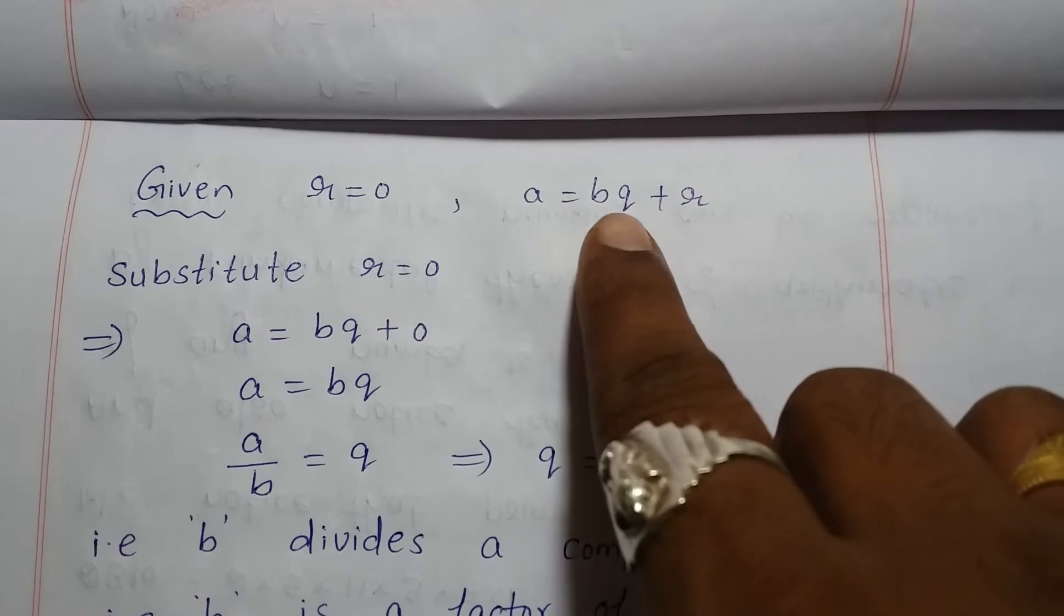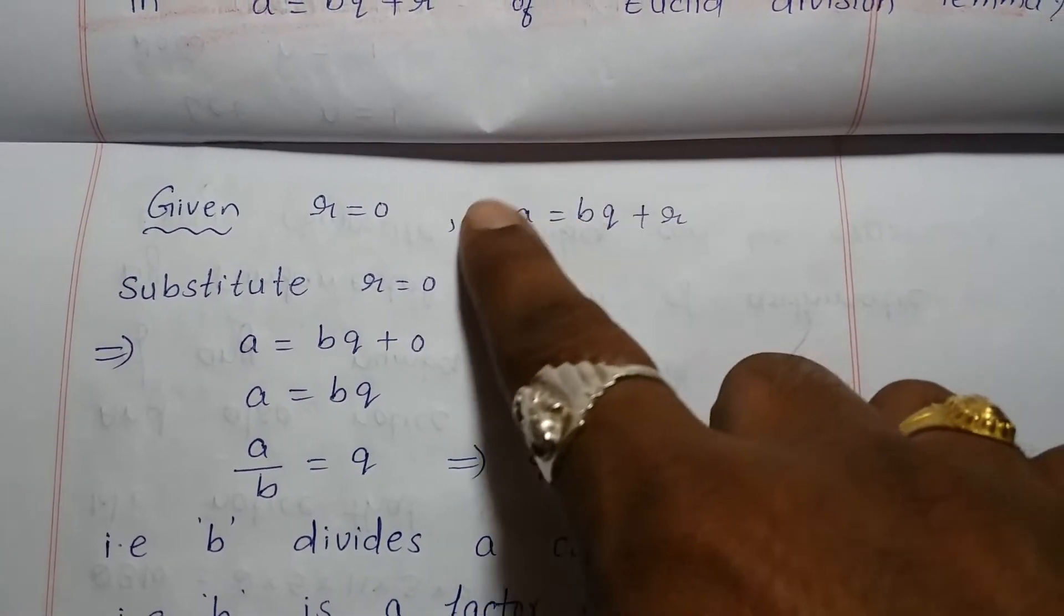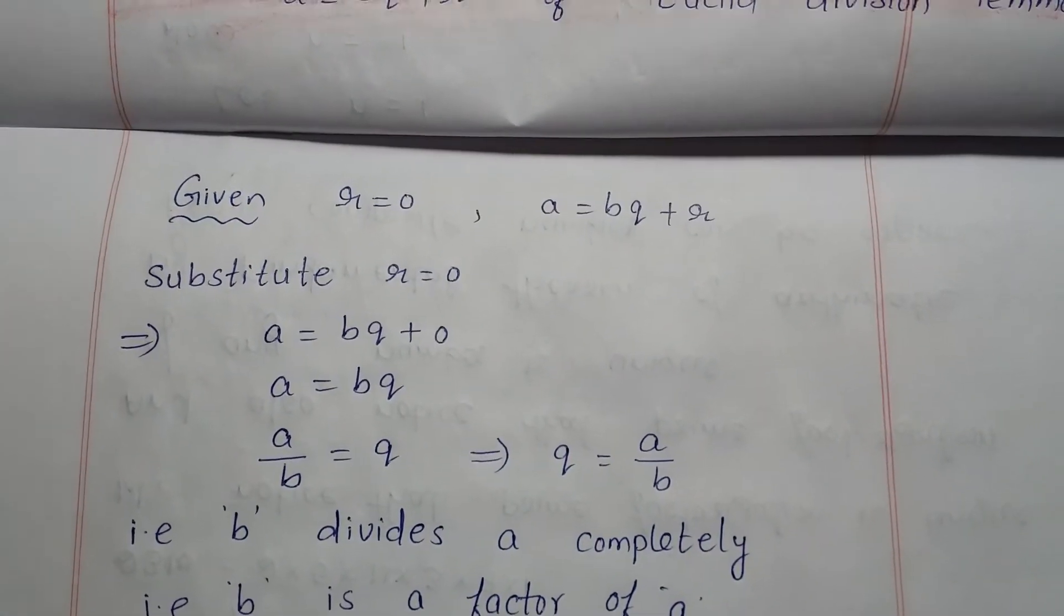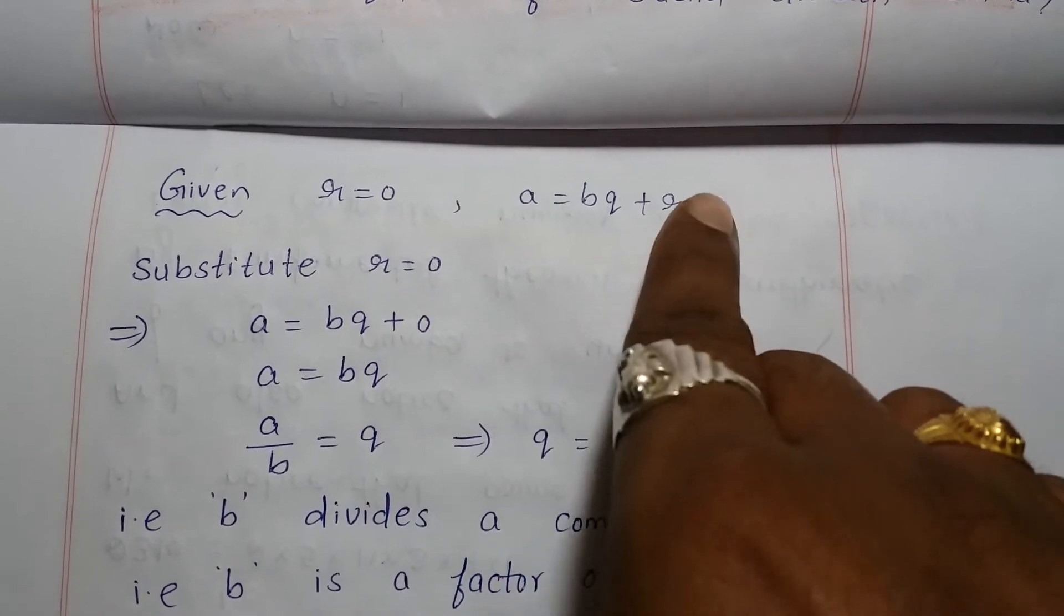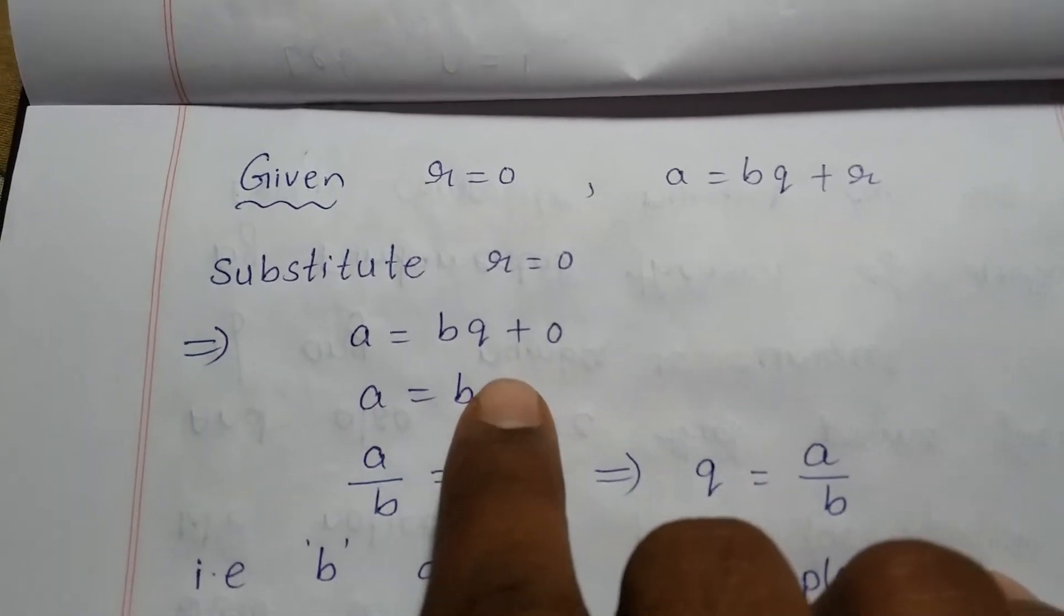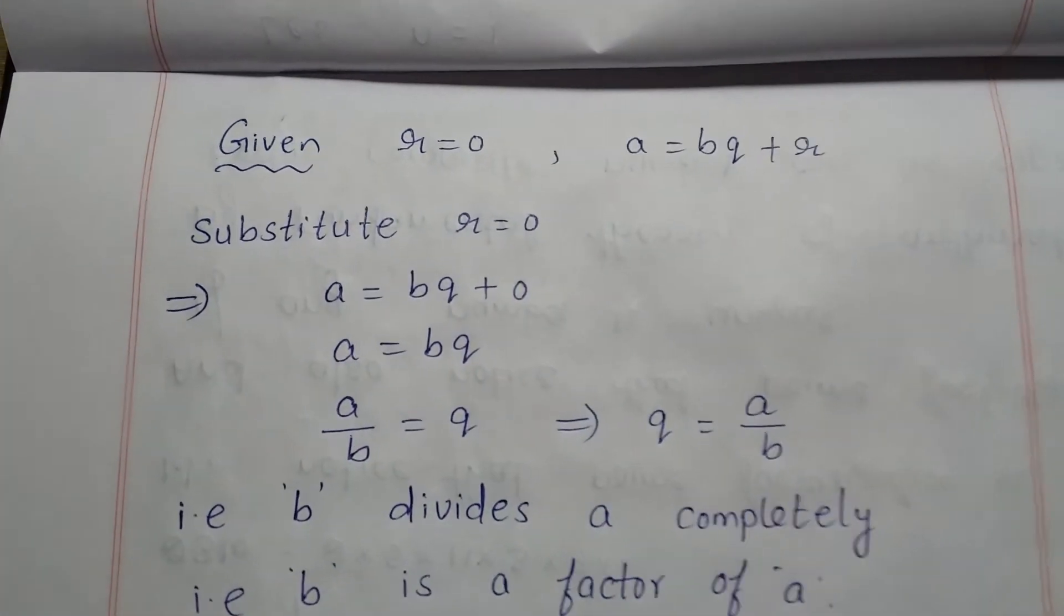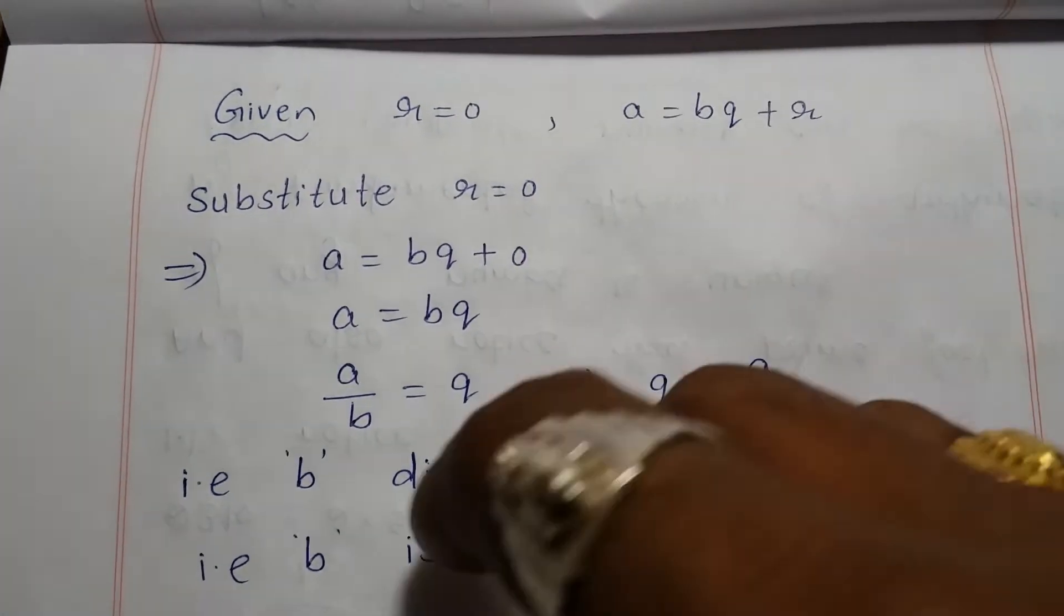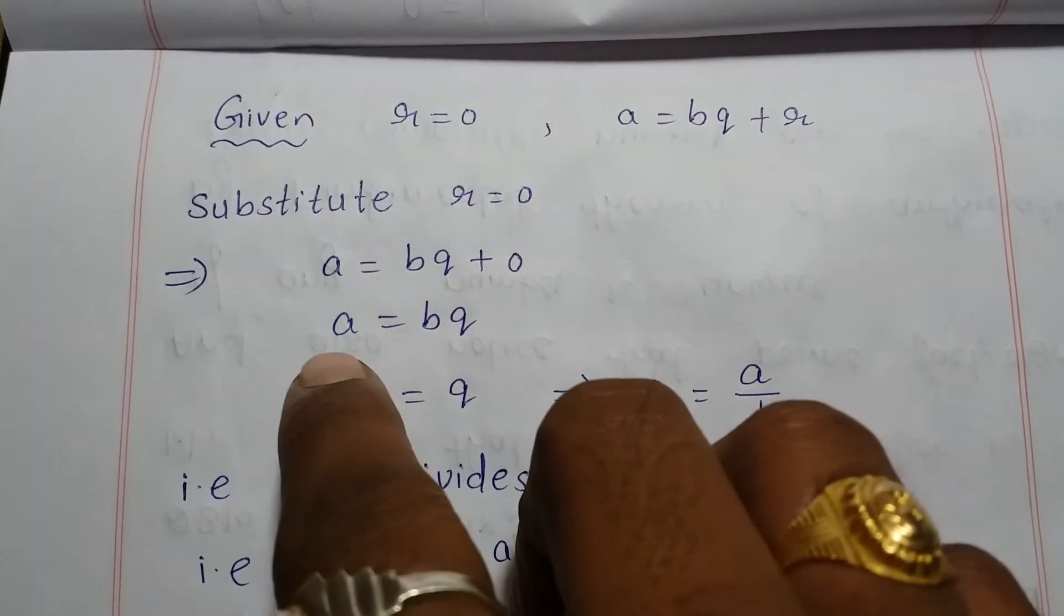is dividend equal to divisor into quotient plus remainder. So substitute r = 0. After substitution, that is a = bq + 0. r value is 0, so if r is 0, what is left? a...